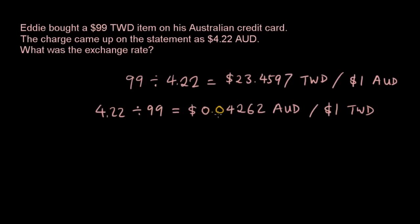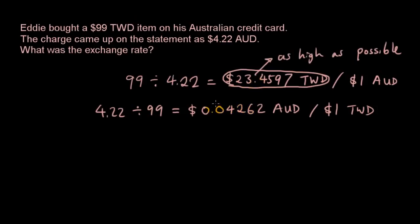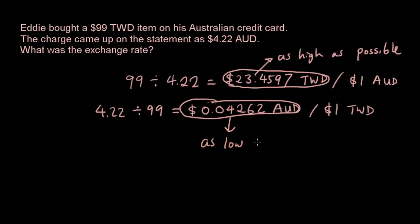Now, because I'm going from Australian dollars to Taiwanese dollars, basically I want this number to be as high as possible — because I don't want to spend too much money to buy one Taiwanese dollar. And if you want to look at it in terms of how many Australian dollars can get you one Taiwanese dollar, then I would want this number to be as low as possible. So that's how the exchange rate works.